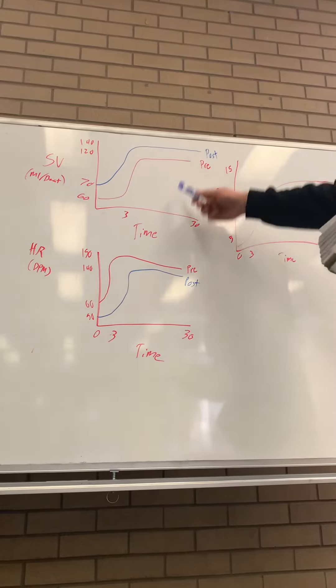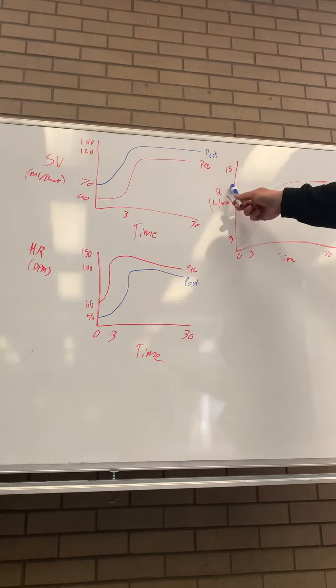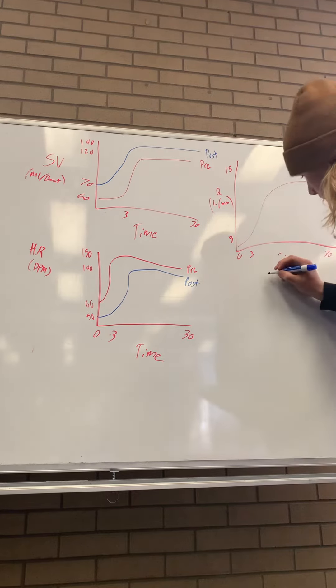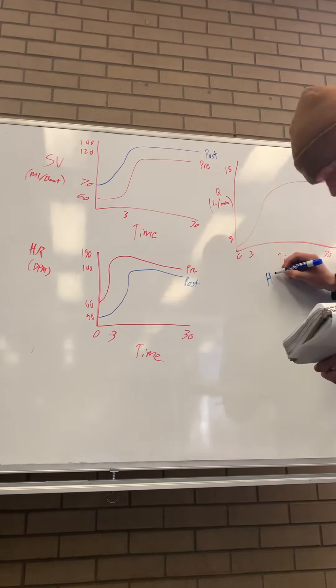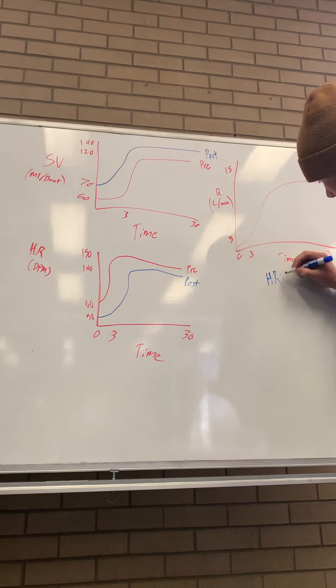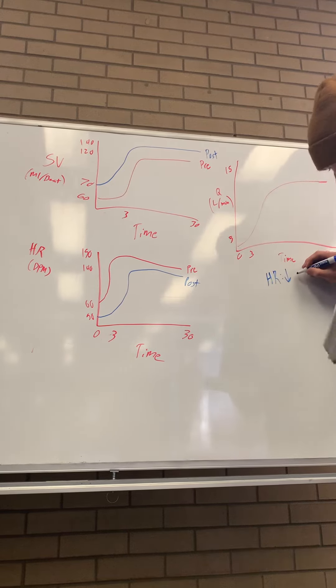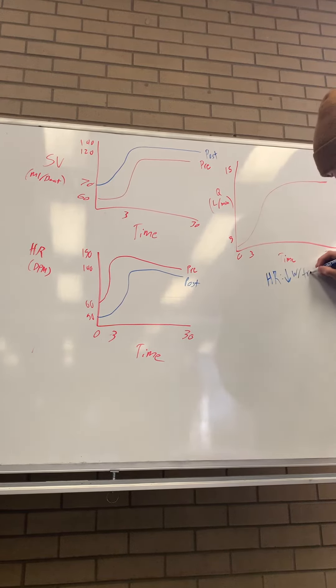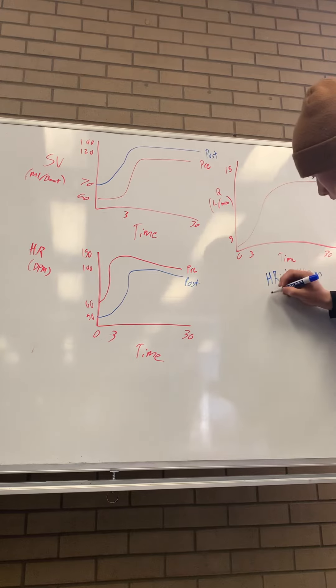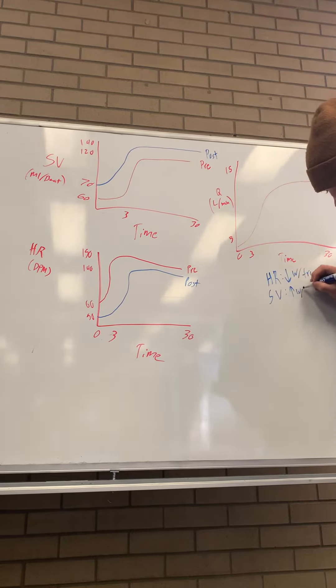These two are going to work together and affect your cardiac output, which is in liters over minutes. If you're post-trained, your heart rate is going to decrease with training and your stroke volume will increase with training.